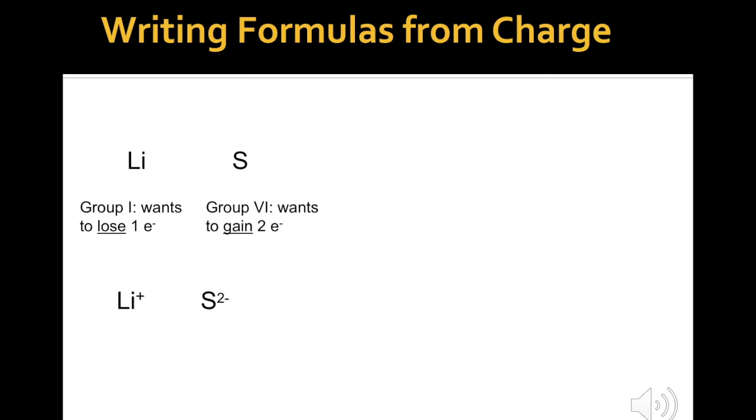So sulfur is going to be minus two. We'll do our crossover method, and we're going to end up with Li2S. That's the compound that forms.